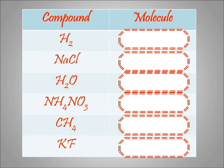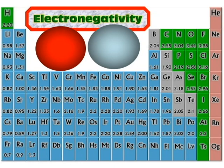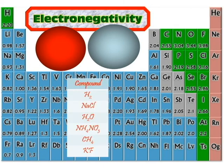Let's go through a list: H2, NaCl, H2O, NH4NO3, CH4, and KF. For H2 — hydrogen is a non-metal (shown in green on the periodic table), and both atoms are non-metals, so the rule of thumb says covalent bond. H2 is a molecule. For NaCl — sodium is a metal (left side), chlorine is a non-metal (right side). Metal + non-metal: ionic bond. NaCl is not a molecule.